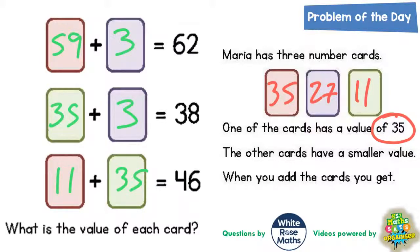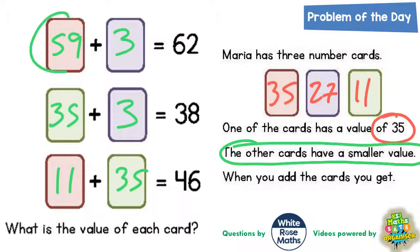It also says the other cards have a smaller value than this 35. And we've got a problem here because this 59 clearly isn't smaller than 35. 59 is bigger than 35, so that doesn't make sense either.